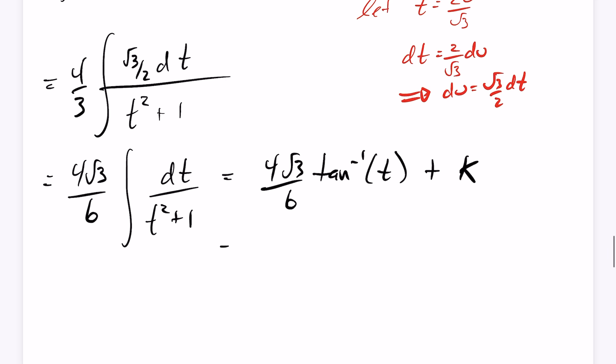I can now simplify this a bit. So this will end up being 2 root 3 over 3, tan inverse. Get rid of that t and change it to a 2u over root 3 plus k. And then one more substitution here. I know that u is actually x plus 1 half.